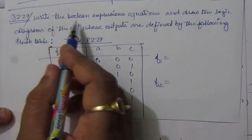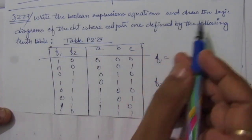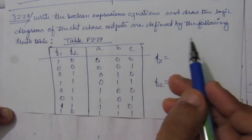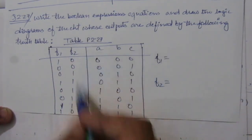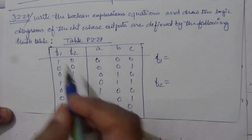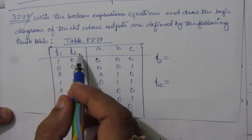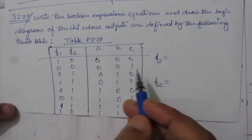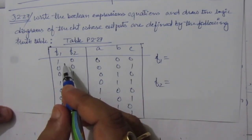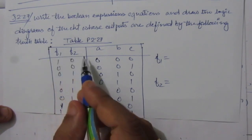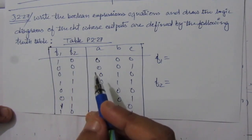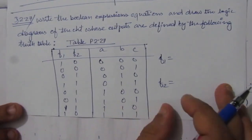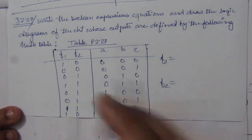The problem is: write the Boolean equations and draw the logic diagrams of the circuit whose outputs are defined by the following truth table. We are given a truth table with two outputs f1 and f2. A, b and c are the inputs, and we have to first write the Boolean expression for f1 and f2, then draw the logic diagram for both functions. You can directly write the f1 and f2 expressions.